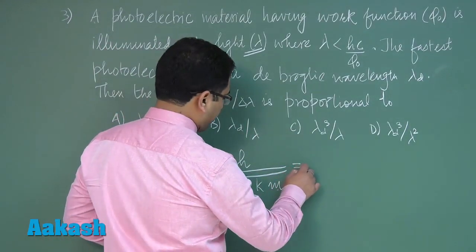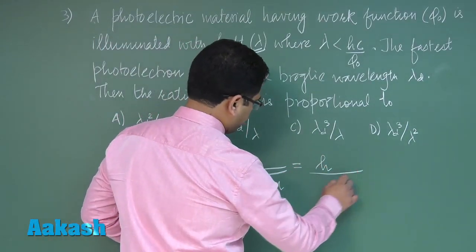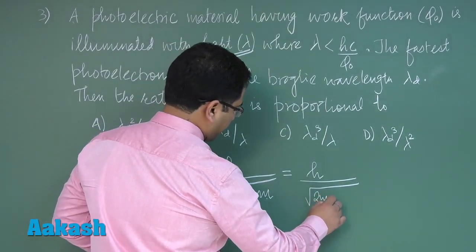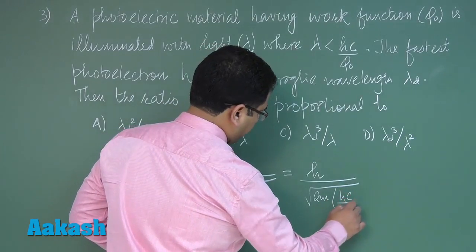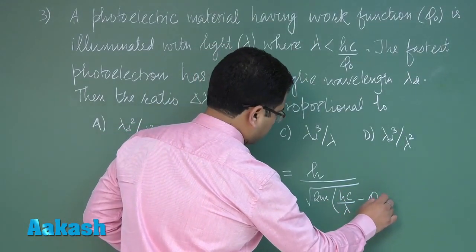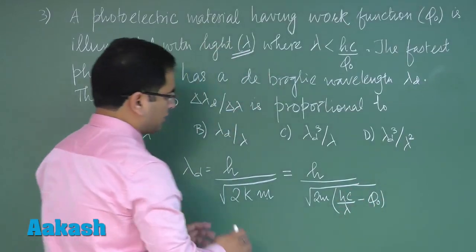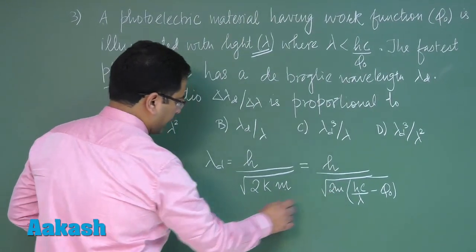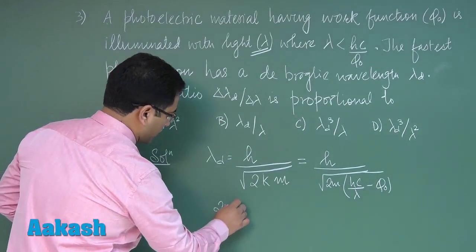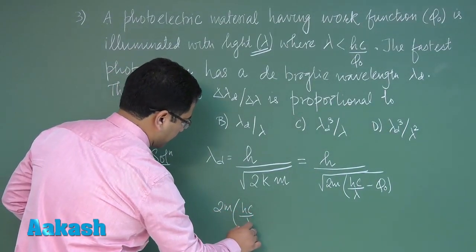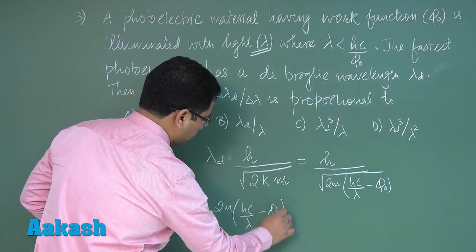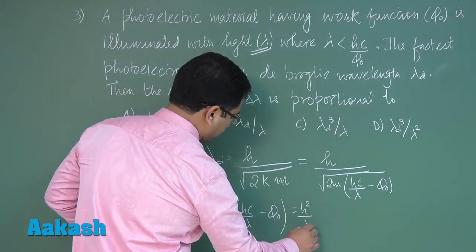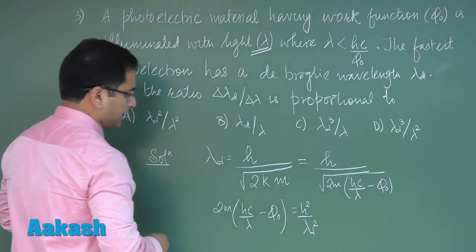The maximum kinetic energy is very easily related this way: hc by lambda minus the work function phi naught. Now there's a slight bit of mathematics required here, and that comes out to be 2m hc by lambda minus work function. This function would equal h squared by lambda d squared.